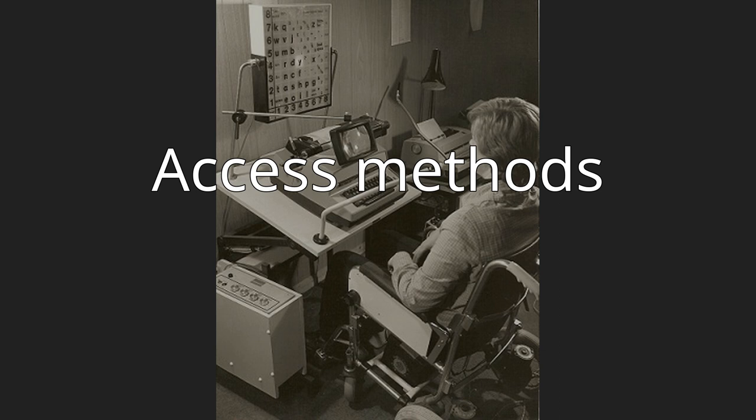With direct selection, a body part, pointer, adapted mouse, joystick, or eye tracking could be used, whereas switch access scanning is often used for indirect selection. Unlike direct selection — e.g., typing on a keyboard — those who are unable to point typically calibrate their eyes to use eye gaze as a way to point, and blinking as a way to select desired words and phrases. The speed and pattern of scanning, as well as the way items are selected, are individualized to the physical, visual, and cognitive capabilities of the user.